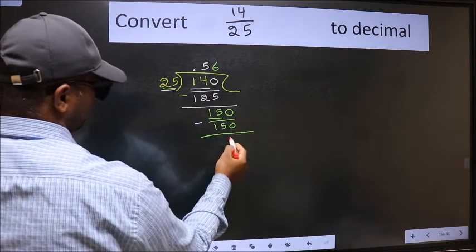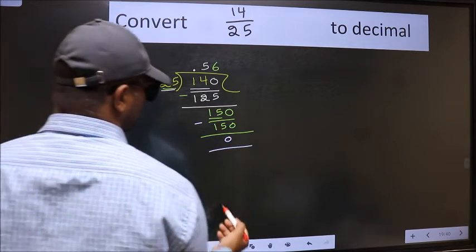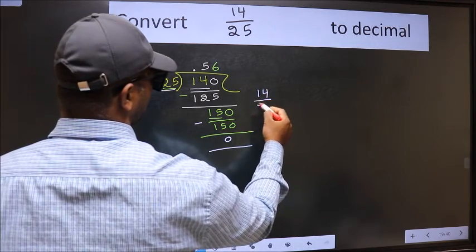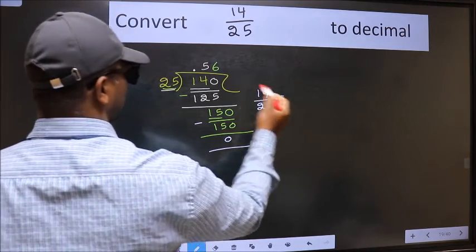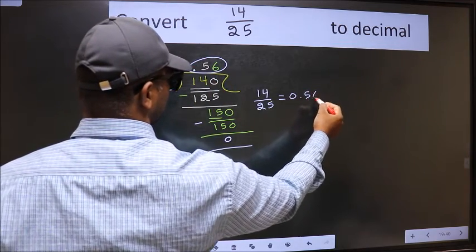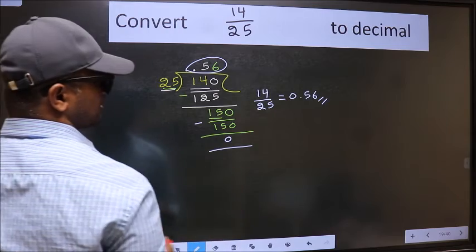Now we should subtract. We got 0. Therefore, decimal of 14 by 25 is 0.56. This is our answer.